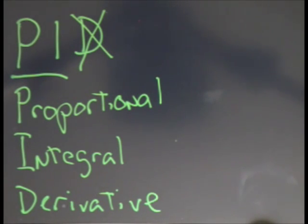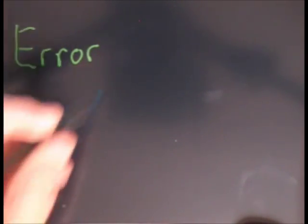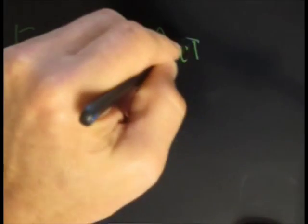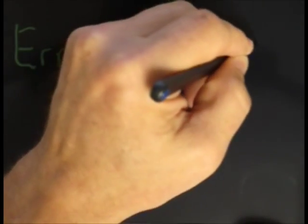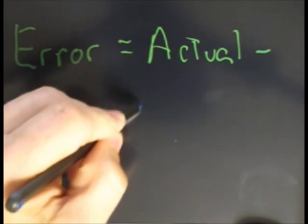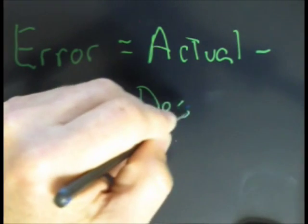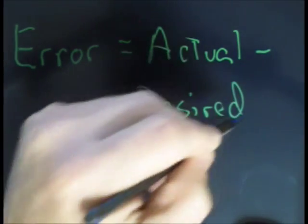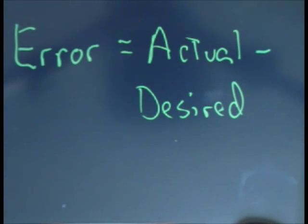Starting with proportional: the proportional portion is where I'm looking at a value, the error value, which equals my actual position minus my desired position. That gives me the proportional portion.